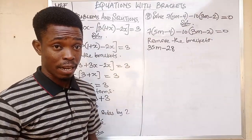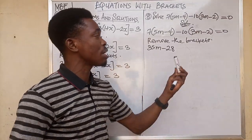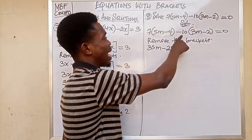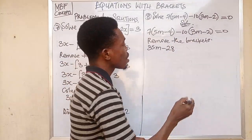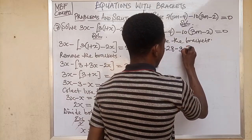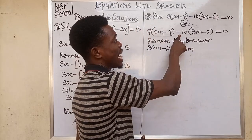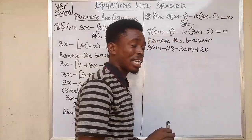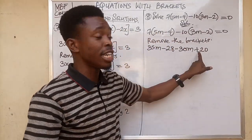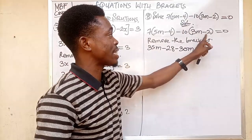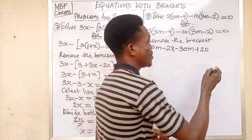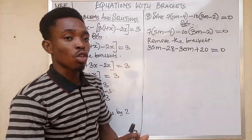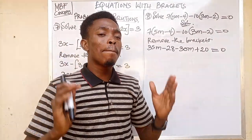Moving to the second bracket, we use minus 10 to remove it. Minus 10 times 3m gives minus 30m, and minus 10 times minus 2 gives plus 20 — remember that minus times minus is plus, and 10 times 2 is 20. So we have 35m minus 28 minus 30m plus 20 equal to zero.